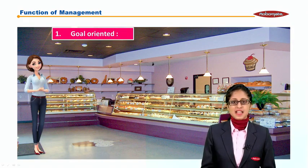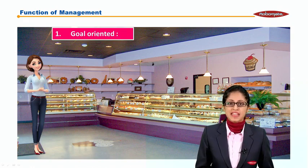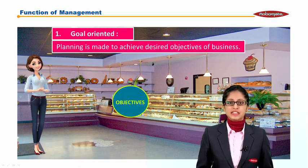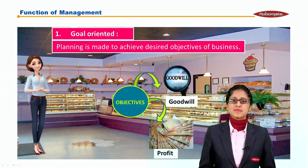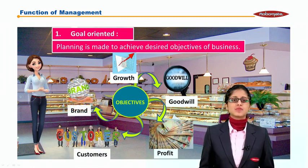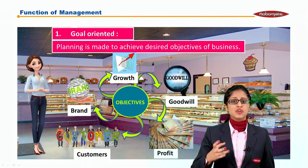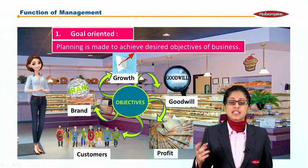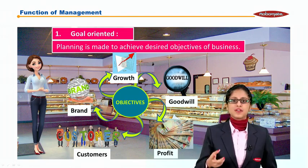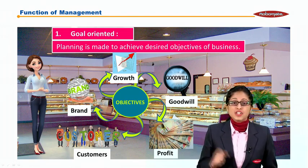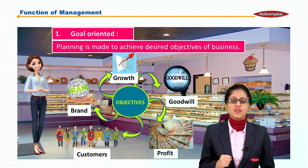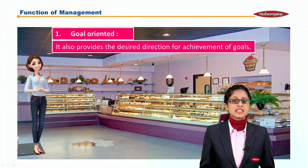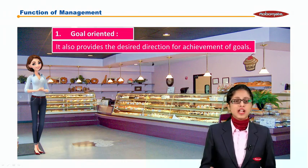Let's understand the first nature of planning — that is, goal oriented. Planning is made to achieve the desired objective of business. It can be goodwill, it can be profit, it can be customer satisfaction, it can be brand, it can be growth. Planning is done to achieve the objectives of the organization or business, and it provides the desired direction for achievement of the goals.